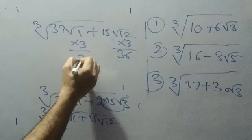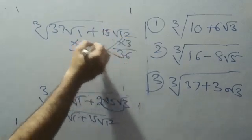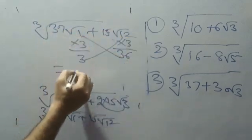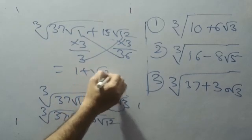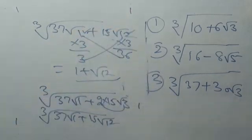This is 3, 3×1 is 3, 3+3 is 6, 36+1=37. What is the answer? 1+√12, which is the range of √5. Thank you.